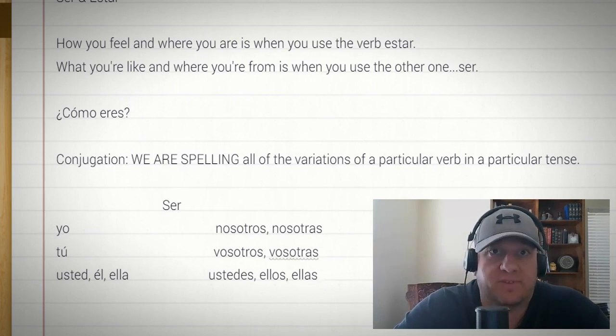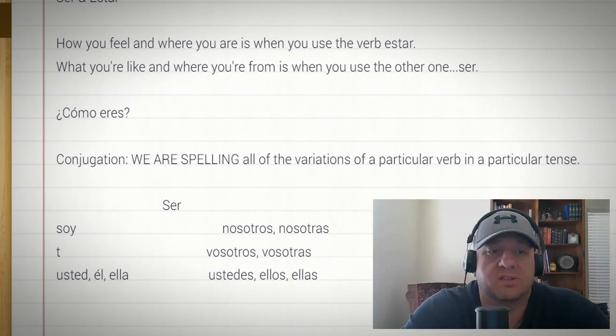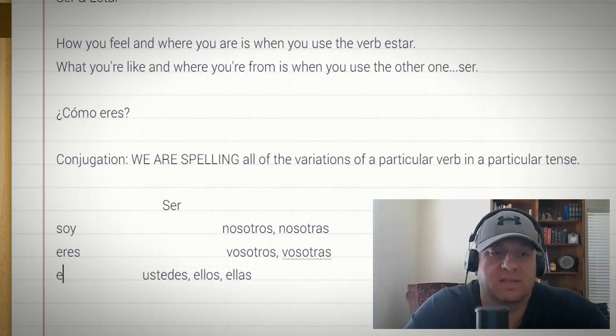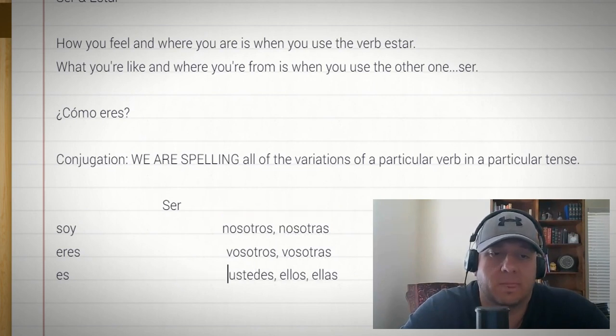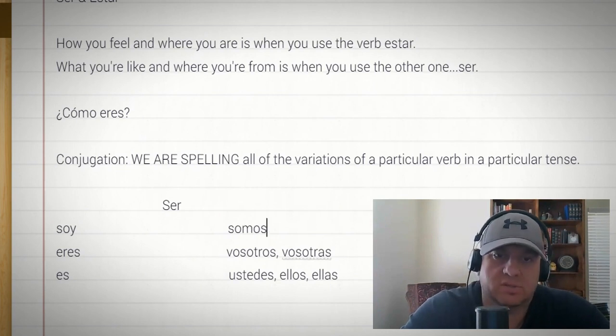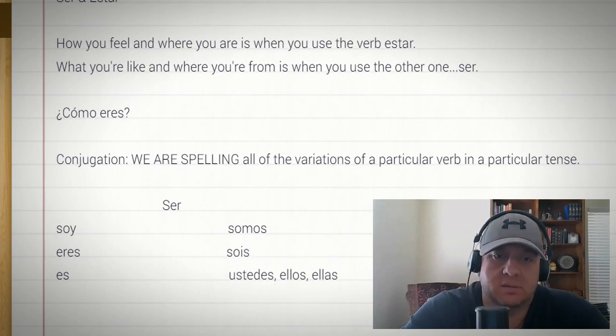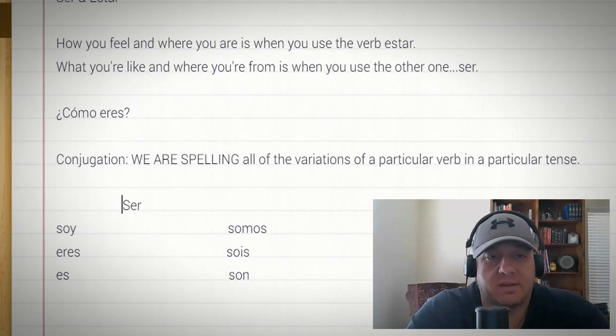Now that we have all the rooms defined, we're going to list the verb forms. The yo form is soy. Yo soy. The tu form is eres. The usted, el, ella form is es. Nosotros and nosotras is somos. Vosotros and vosotras is sois. And ustedes, ellos, and ellas is son. Very good. So, that's how you conjugate the verb ser.